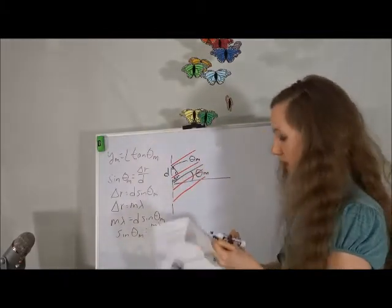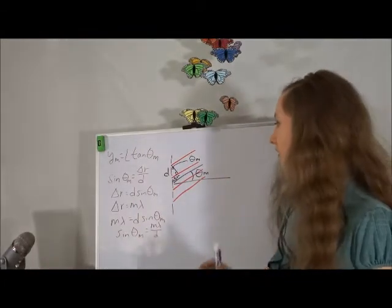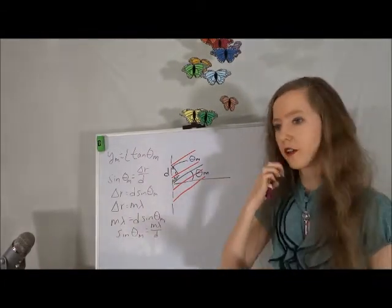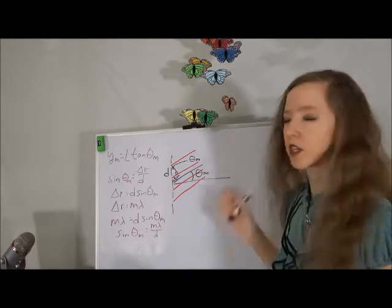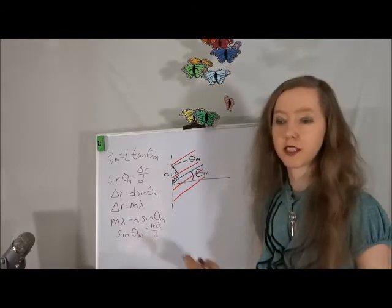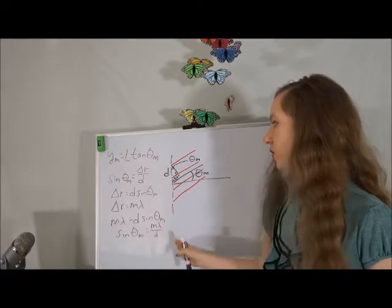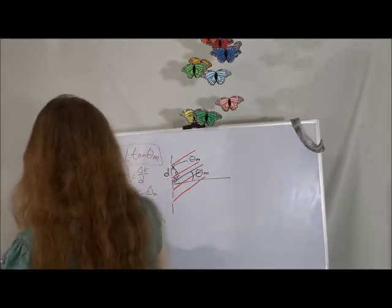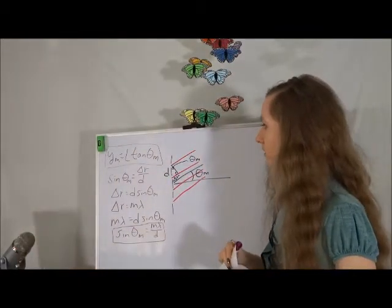The big difference between our diffraction grating and our double-slit interference is that we can no longer use the small angle approximation. So usually when we do problems involving the diffraction grating, we're looking for the height y_m, and we need to use the sine theta_m equation to solve for our angle first, then plug it into the y_m equals L tan theta equation. These two equations are what we use for the diffraction grating.